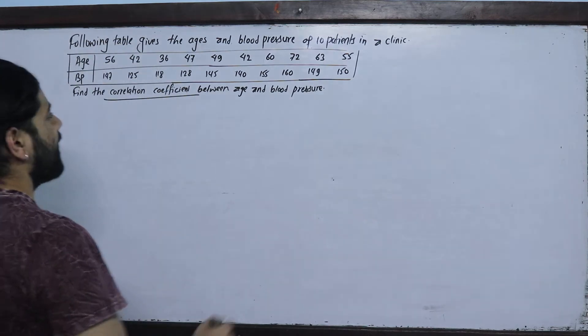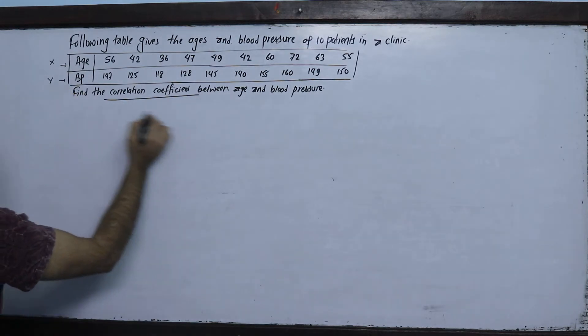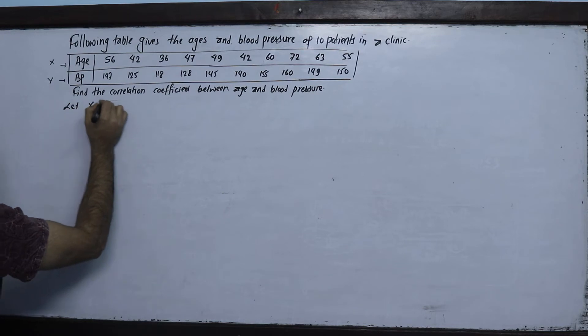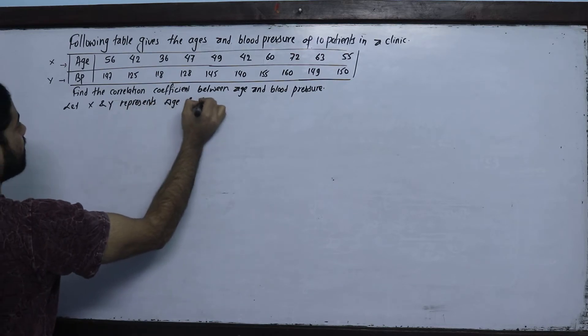To find the correlation coefficient, let x represent age and y represent blood pressure.